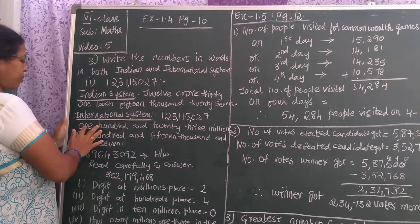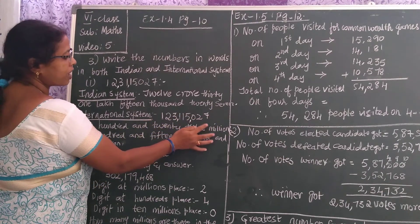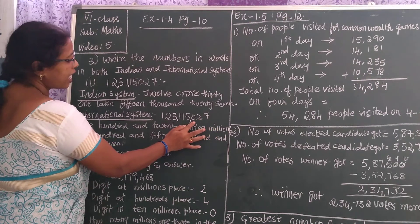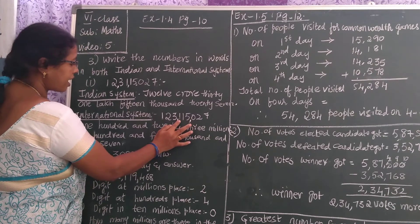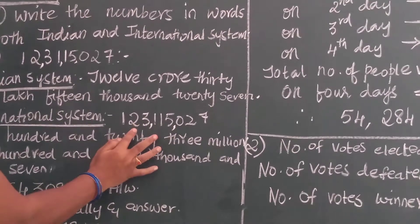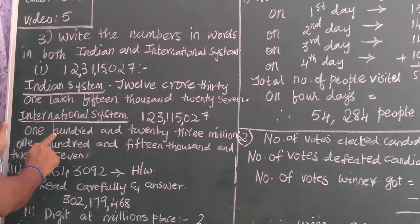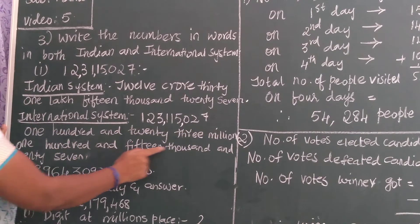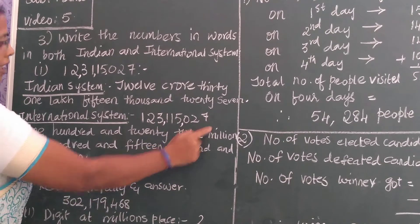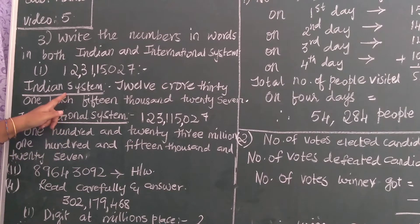Now, in international system of numeration, I am expressing this number. You should know the place values — ones, tens, hundreds, thousands, ten thousands, hundred thousands, millions, ten millions, hundred millions. So the number is: one hundred and twenty-three millions, one hundred and fifteen thousand, and twenty-seven.